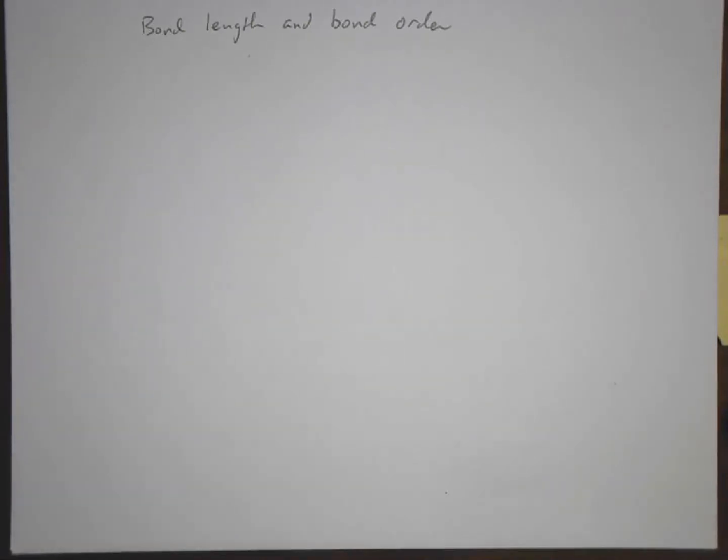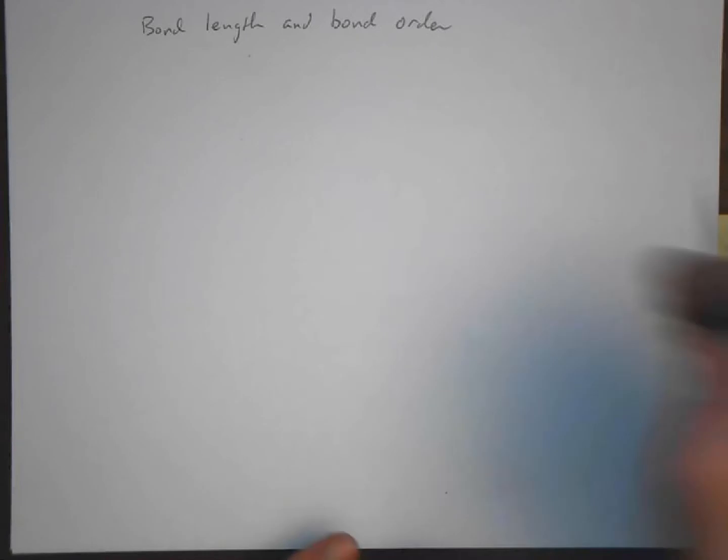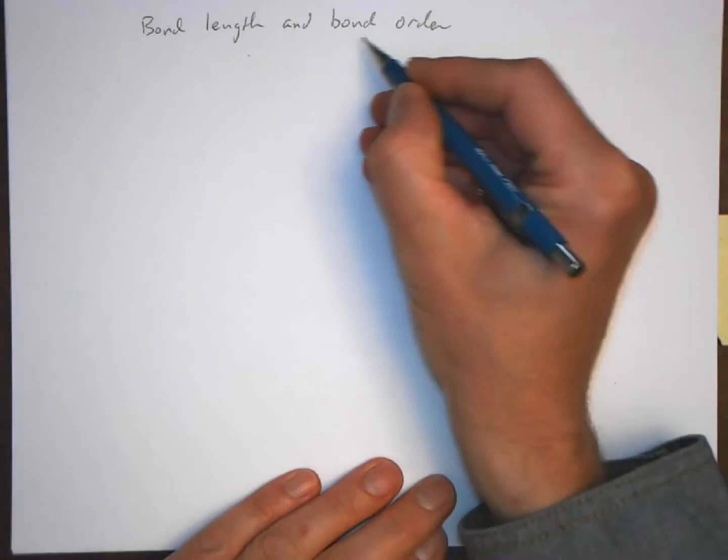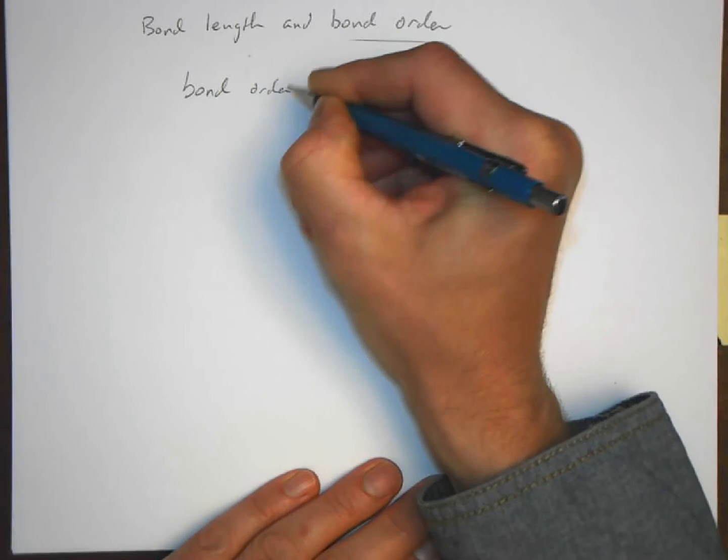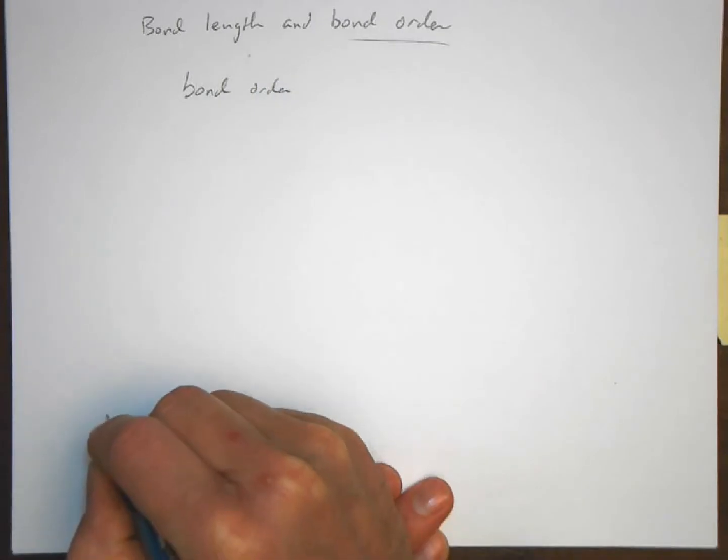This is the final lecture for chapter 9. The first topic we're going to look at is bond length and bond order. This is relatively straightforward, but bond order for starters is the number of electron pairs in the bond.